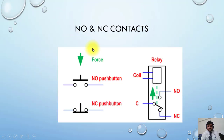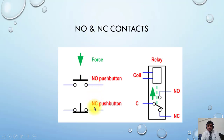Here is another example: this relay is not picked up, so this is the normal position of the relay. When de-energized, the relay is not picked up, so the normally open contact will be open, and at de-energized position the normally closed contact will be closed. Once the coil is energized through some supply, the NO contact will change to closed and the NC contact will become open.